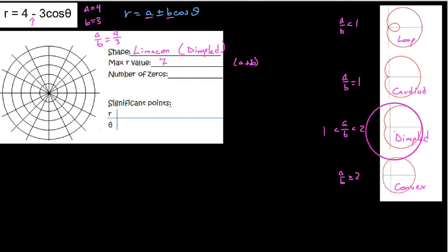And in terms of the number of zeros, looking at this curve right here, what you'll notice is that it never gets an r value of 0. It's just not going to happen. So we say this has no zeros.